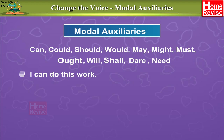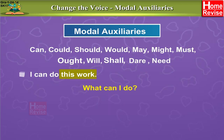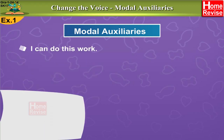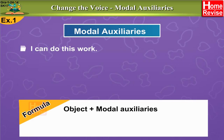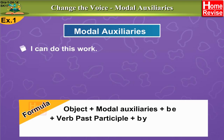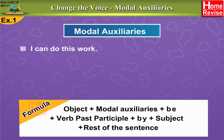But before that, how do we identify the object? By asking a question beginning with 'what.' What can I do? — This work. So 'this work' is the object. The formula for changing such sentences into passive voice is: Object + modal auxiliary + be + past participle of the verb + by + subject in the objective case + rest of the sentence.